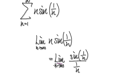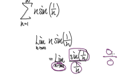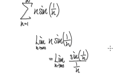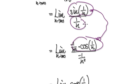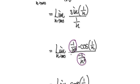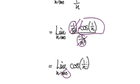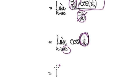Now let's check it. As n tends to infinity, this whole block here will head towards zero, and this block here will also head towards zero. Zero over zero is an indeterminate form, so you can apply L'Hôpital's rule. Applying L'Hôpital's rule means you differentiate the top, which gives you this, and then differentiate the bottom, which gives you this. These two cancel each other out, leaving you with cos(1/n). So as n tends to infinity, 1/n heads towards zero, and cos of zero equals 1. So the limit of this expression is 1.